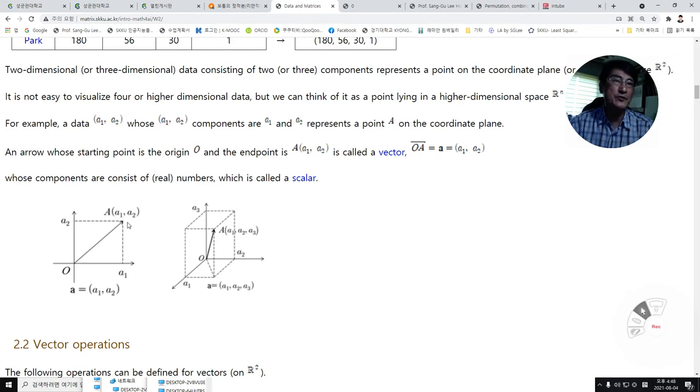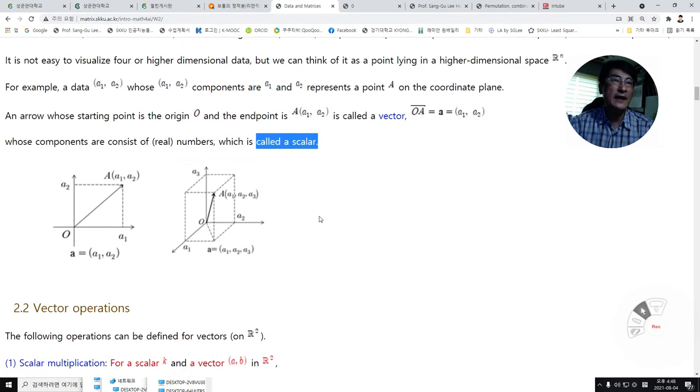These components a1 and a2 are called scalars. In R3, a vector OA is an arrow whose origin is O and the endpoint is the point (a1, a2, a3) in R3.